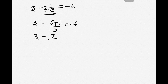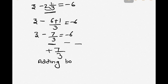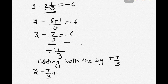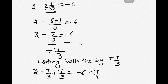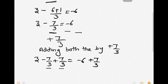So z minus 7 upon 3 is equal to minus 6. We can shift minus 7 by 3 onto the right hand side, or we can add both sides by plus 7 by 3. We will use the second method — adding both sides by plus 7 by 3. So z minus 7 by 3 plus 7 by 3 is equal to minus 6 plus 7 by 3.